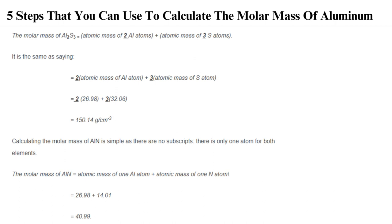3. List all the elements. The third step is to list the elements in the compound. Let's use our two examples, AlN and Al2S3. The elements in AlN are Al, aluminum, and N, nitrogen. The elements in Al2S3 are Al, aluminum, and S, sulfur.